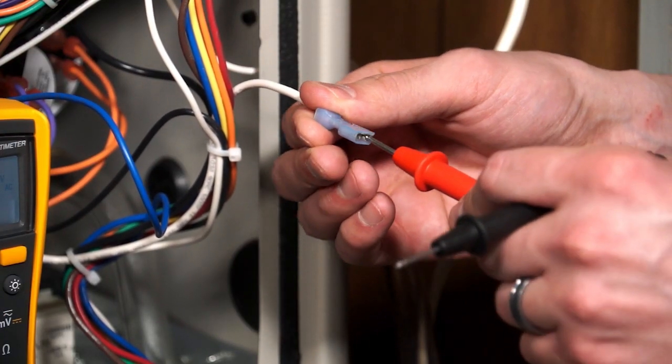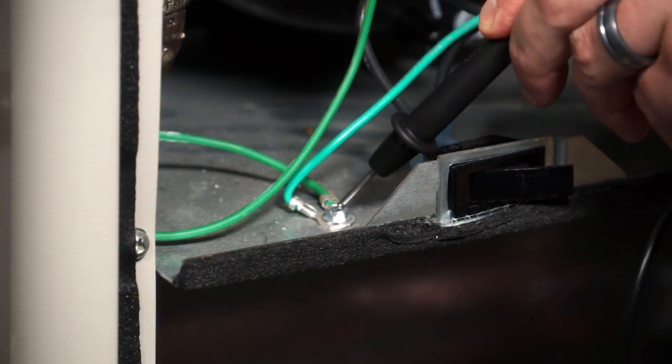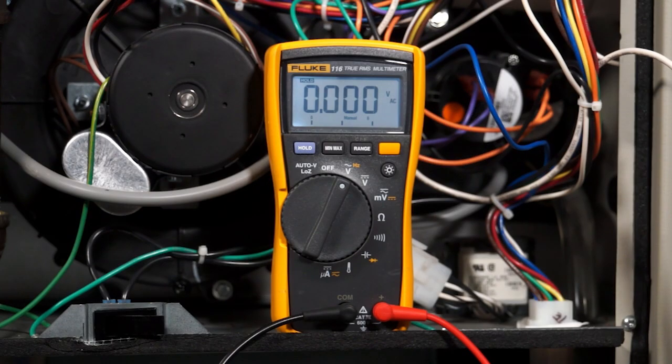Attach your meter lead to the neutral wire coming into the furnace. Take your other meter lead and place it on the grounding screw. Then check your reading.